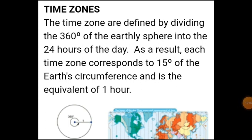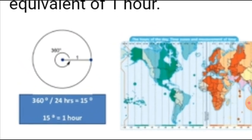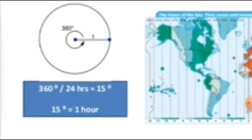Time zones are defined by dividing the 360 degrees of the earth into 24 hours. So 360 divided by 24 equals 15 degrees. Each longitude line going east or west is 15 degrees apart, and it takes the earth 1 hour to cover each 15 degrees. You can see here: 360 ÷ 24 hours = 15 degrees, and covering 15 degrees takes 1 hour.